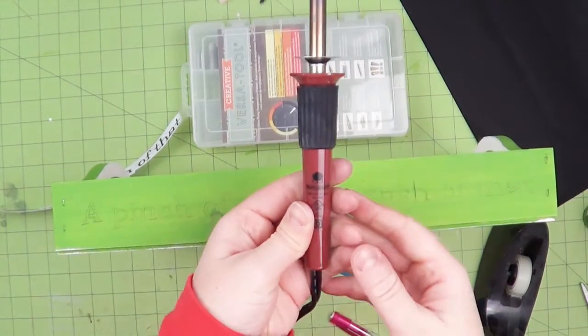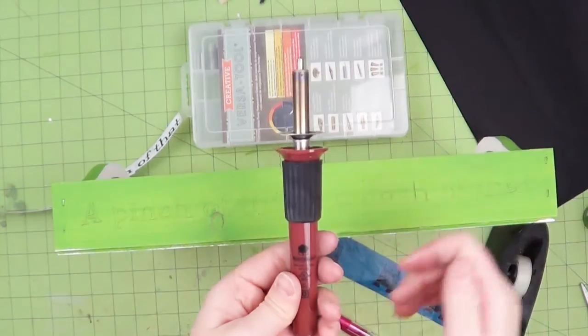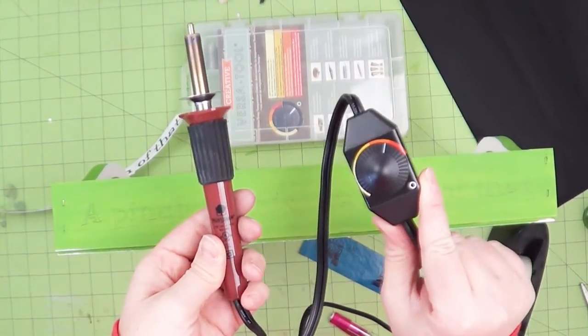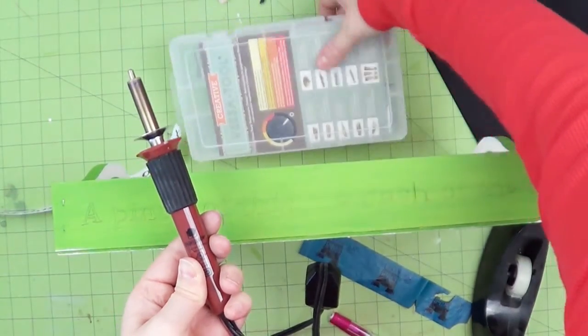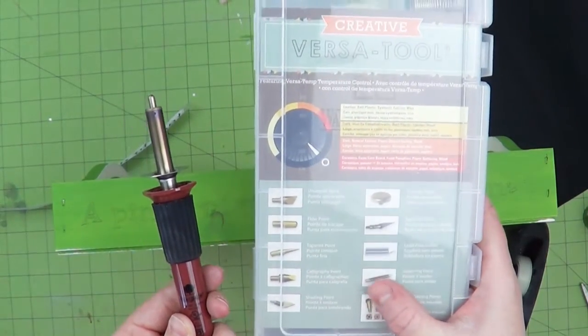Once I have carbon copied my sentiment onto the serving tray, it is time to burn each letter into the side. I am using Walnut Hollow's Creative VersaTool and the included flow point. As you can see, I had set my temperature control between the orange and the red to burn wood.